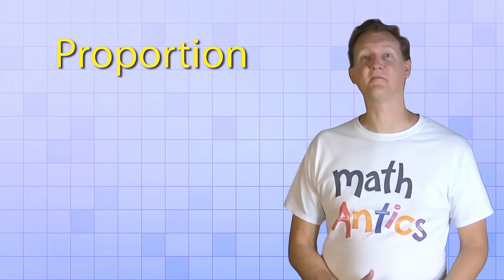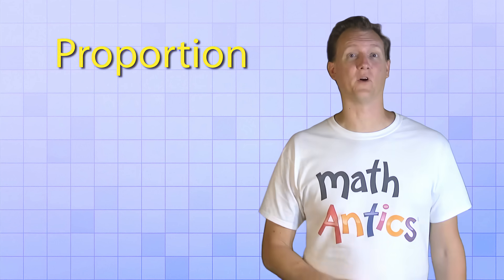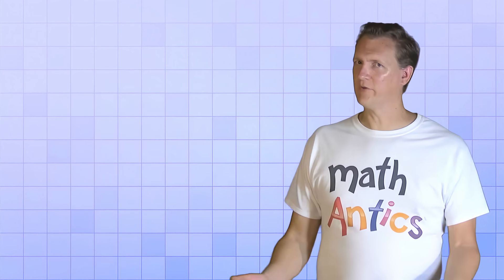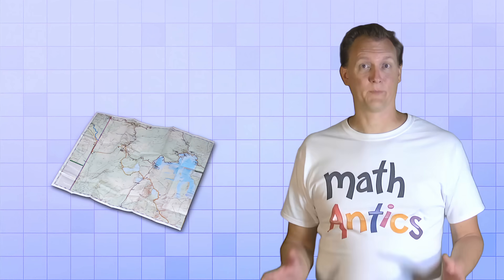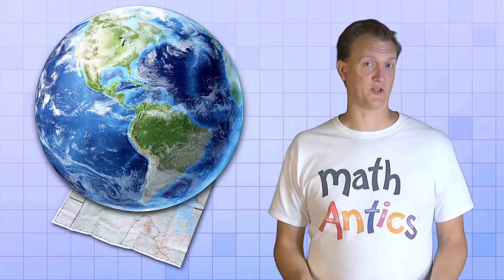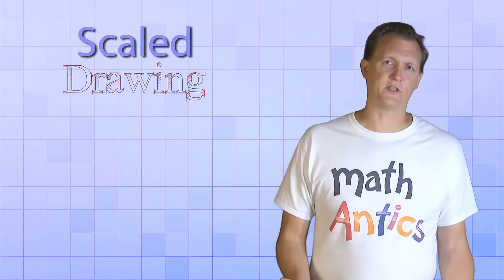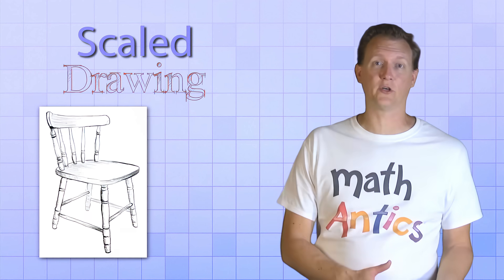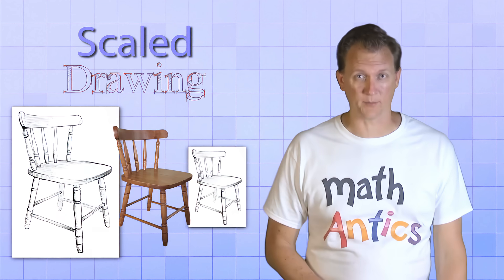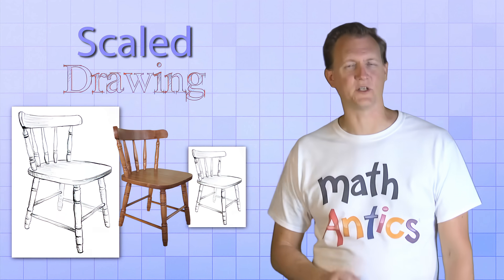Alright, let's see another example of using a proportion to find an unknown. This one involves a map. Have you ever noticed that maps are a lot smaller than the real-life places that they show? A map is a good example of something called a scale drawing. Which is just a drawing that's either larger or smaller than the real thing it depicts, but it's still in proportion to that thing.